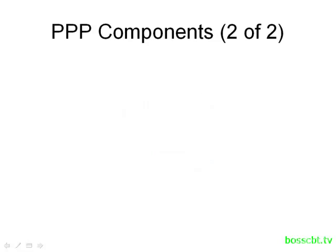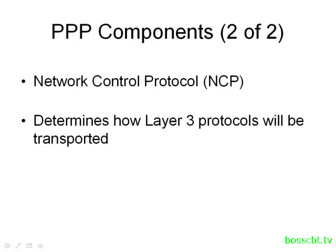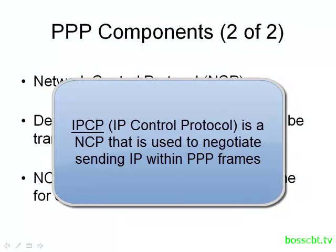The second component of PPP is NCP, or Network Control Protocol. This is used to determine how the Layer 3 protocols are going to be transported and which ones will be transported. NCP is actually a suite — an umbrella name for many different protocols. Each Layer 3 protocol has its own dedicated NCP for negotiation. For example, if two routers want to transport IP over a serial link, they would use IPCP, or IP Control Protocol, to negotiate how they would send IP over the link.